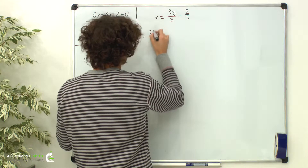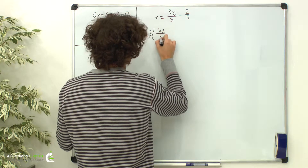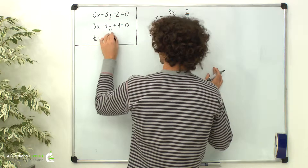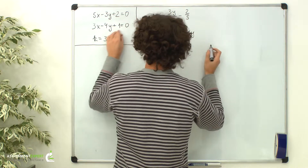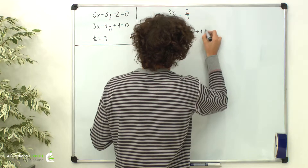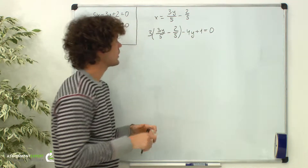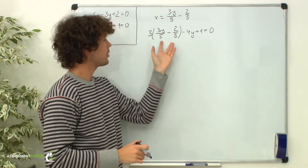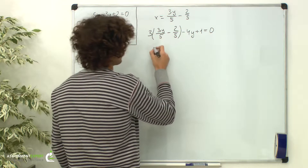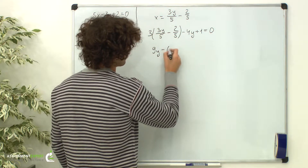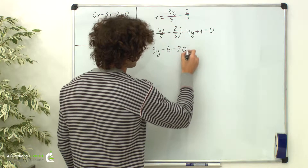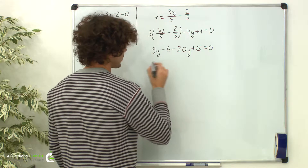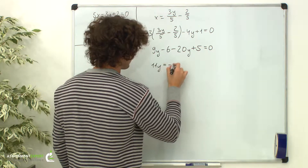So we get 3 times (3y/5 minus 2/5) minus 4y plus 1 equals 0. Let's open the braces and multiply the equation by 5 to eliminate denominators. We obtain 9y minus 6 minus 20y plus 5 equals 0.